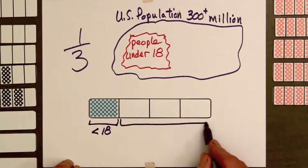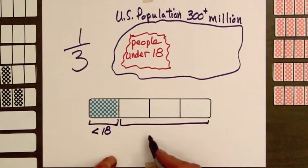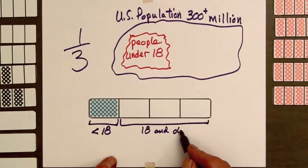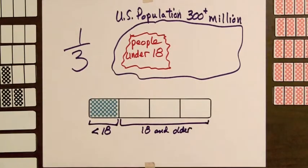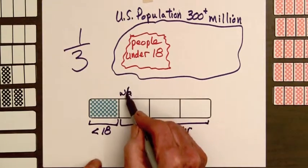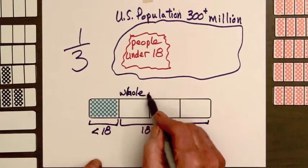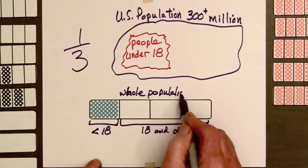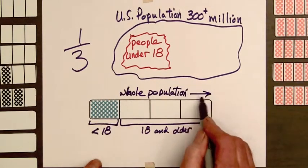Here we have the 18 and older. And up here we have the whole population. That's represented by the whole bar here.